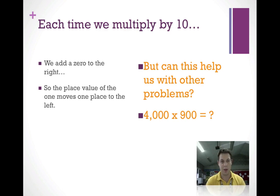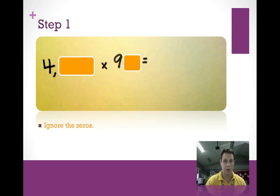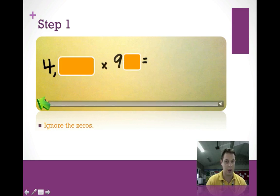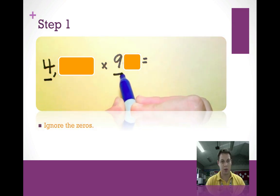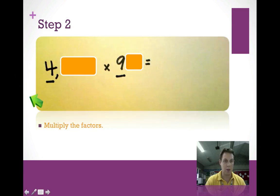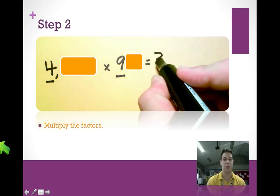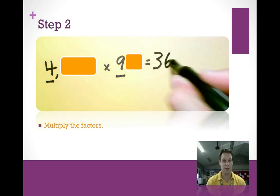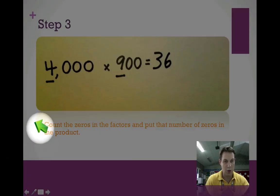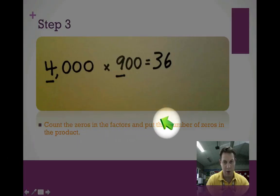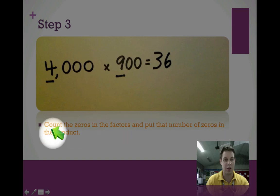What are the steps? Step one: ignore the zeros — pretend like the zeros aren't even there — and only focus on the 4 and the 9. Then step two: multiply the two factors. The factors are the numbers you multiply. So 4 times 9 is 36. Once we've got the 36, we're going to bring the zeros back.